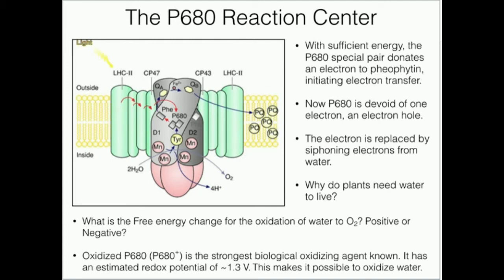Welcome back to our study of photosynthesis. In this video we're going to talk about the basic mechanics of the photosynthetic reaction center in photosystem II. Photosynthesis, at least the light-dependent reactions, are named somewhat strangely. Photosystem II comes before photosystem I in the process. The reason photosystem II is named such, even though it comes first, is because photosystem I was the first one discovered, and no one bothered to correct the naming system since it was already convention.